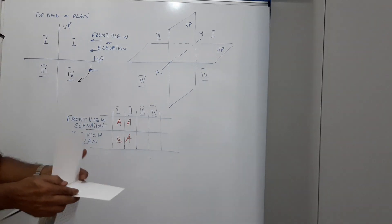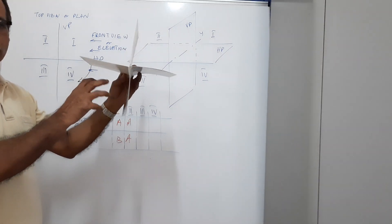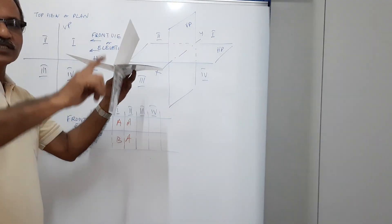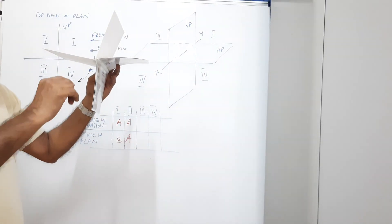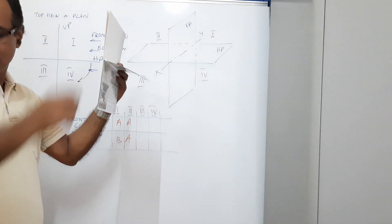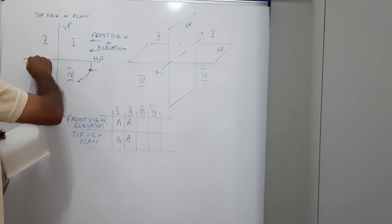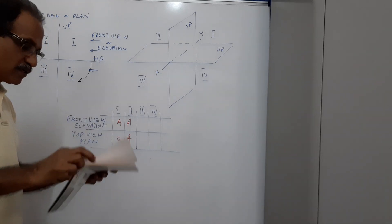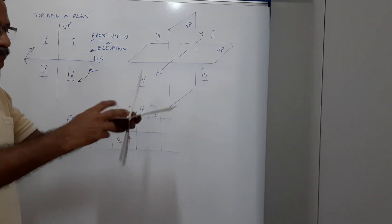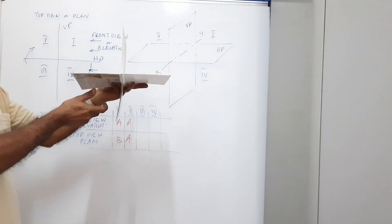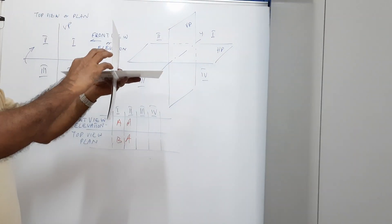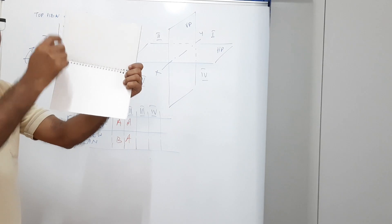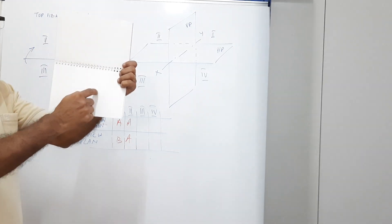Third quadrant: look from the front to get the elevation on the VP, look from the top to draw the plan on the HP. Go back and rotate the HP through 90 degrees clockwise. Result: the elevation is below the XY line and the plan is above the XY line — the reverse of the first quadrant.